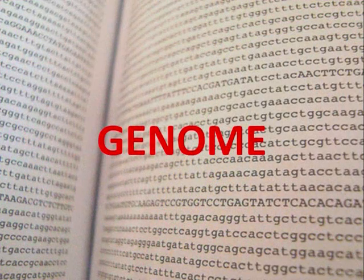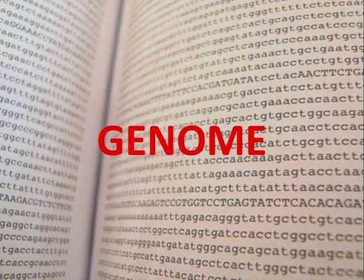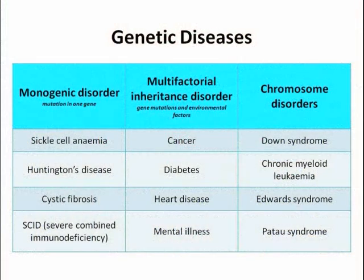The complete set of genetic information for a particular organism is known as its genome. The entire human genome was determined in 2003 and has led to an improved understanding of many genetic conditions. Such diseases include cystic fibrosis and Huntington's disease, and more complex conditions such as heart disease and alcoholism may also have genetic links. These may result from changes to the normal sequence of bases in particular genes, and non-functional or harmful proteins may be produced as a result, which can lead to complex repercussions.